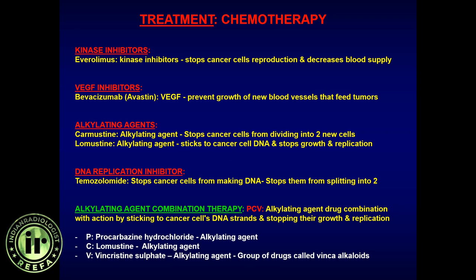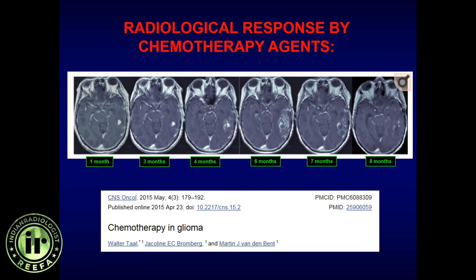In a tumor conference, when asked whether changes represent recurrence or pseudo-progression, you need to know what agent was given and the patient's genetic code. If temozolomide was given to an unmethylated patient, it likely won't work and changes probably represent recurrent tumor. If given to a hypermethylated patient, post-treatment changes in surrounding parenchyma are more likely treatment-related rather than recurrent, and an aggressive approach should be held back.